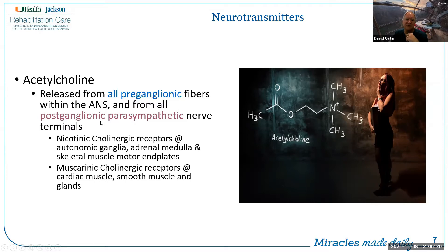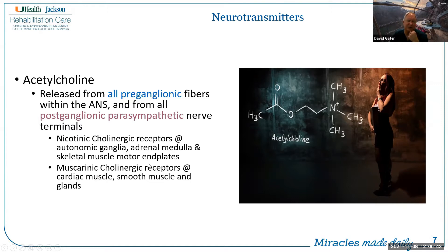Acetylcholine is also released from the post-ganglionic parasympathetic nerve terminals. We recognize its influence with both nicotinic and muscarinic cholinergic receptors. The nicotinic receptors lie at the autonomic ganglion, the adrenal medulla, and skeletal muscle at the motor end plates. The muscarinic cholinergic receptors are found in cardiac muscle, smooth muscle, and glands.